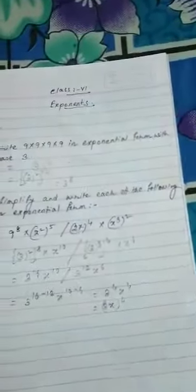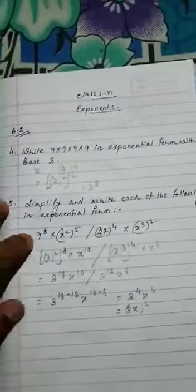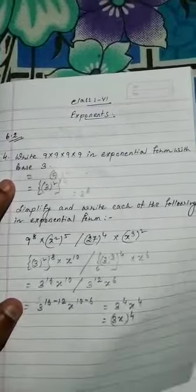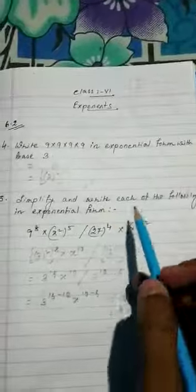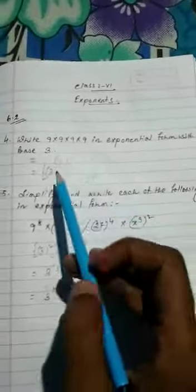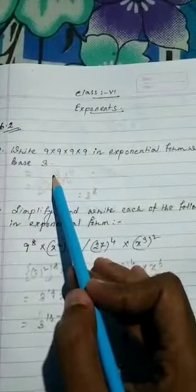If you will open that chapter, that is the exponent chapter, and question number 4, it says write 9 into 9 into 9 into 9 in exponential form with base 3. So base you have to make 3.